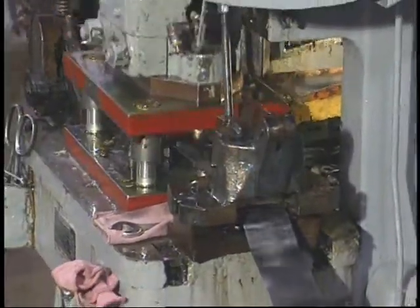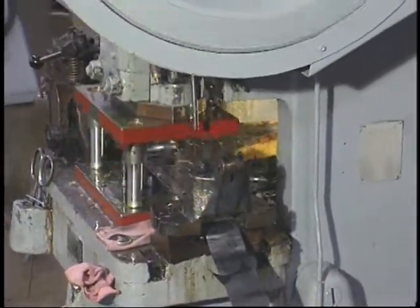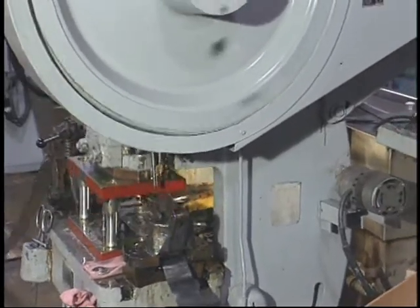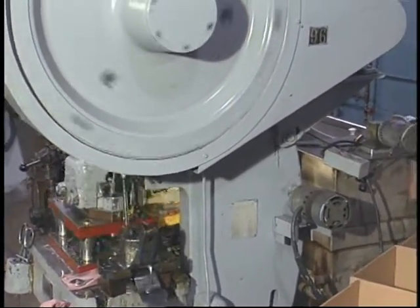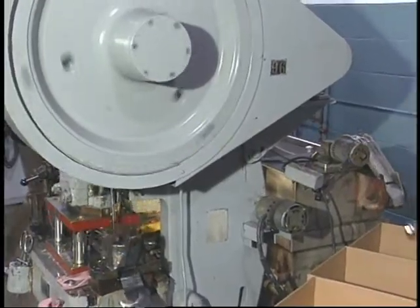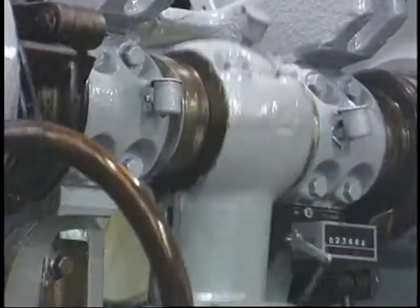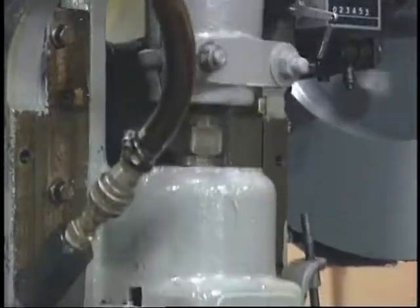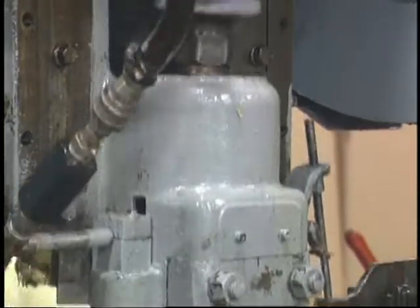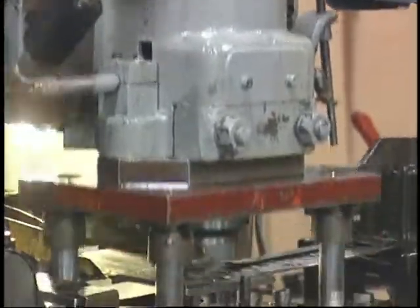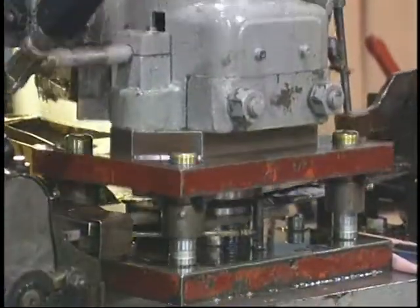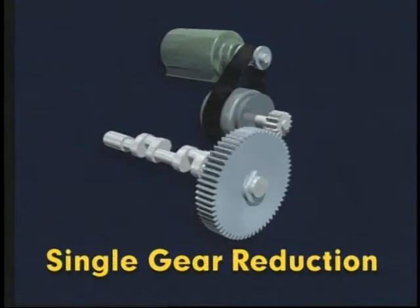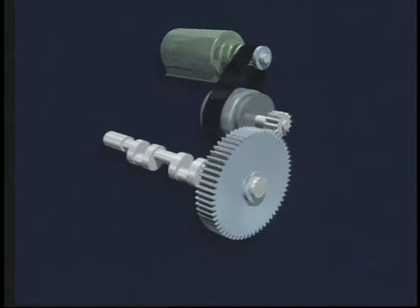Other advantages of the direct drive's simple design include fewer moving parts to wear out and less frictional loss of mechanical energy. However, the full rated force of the machine is only available very close to the bottom of the stroke, and the ability to deliver rated forces is substantially reduced if the press operates at less than full speed. In single gear reduction presses, the flywheel is mounted on the back shaft and power is transmitted through a pinion to a main gear mounted on the crankshaft.